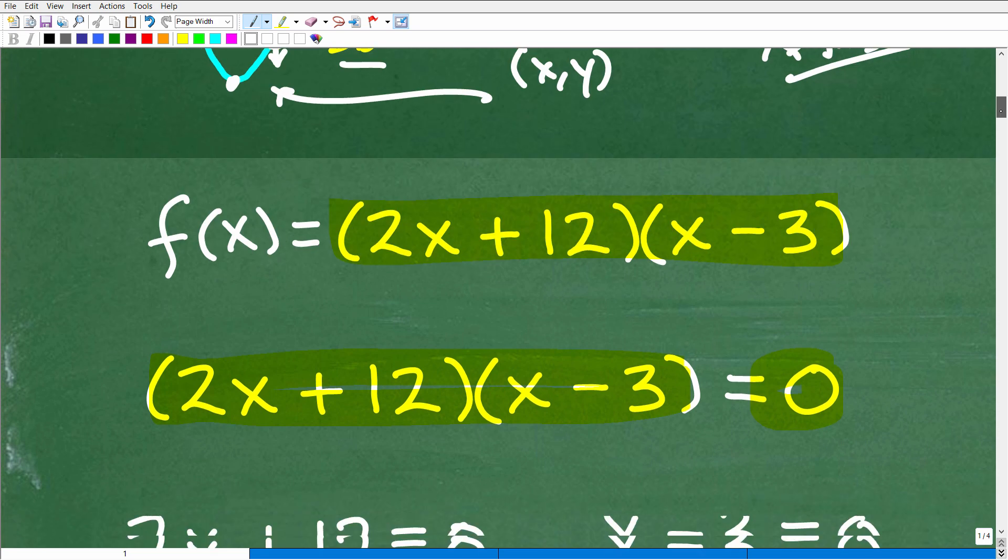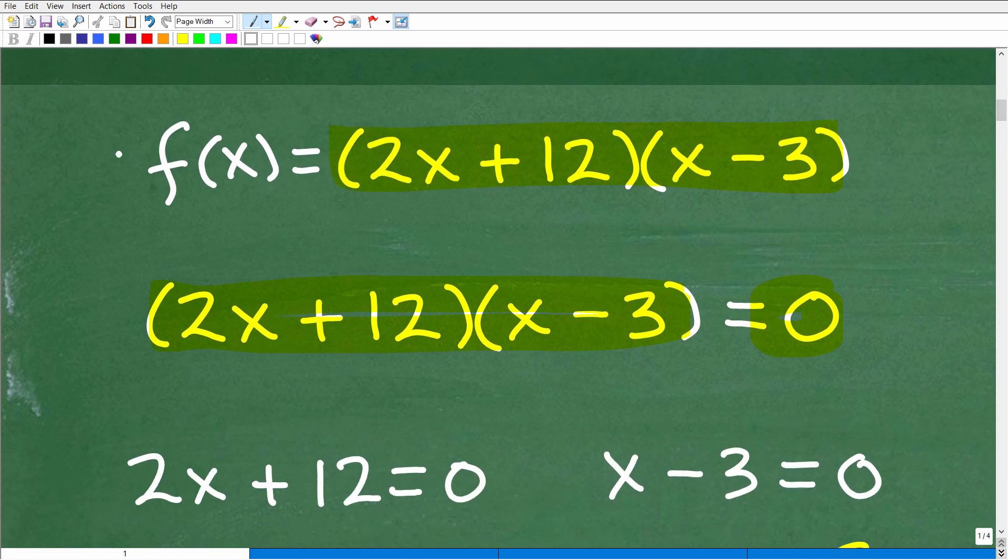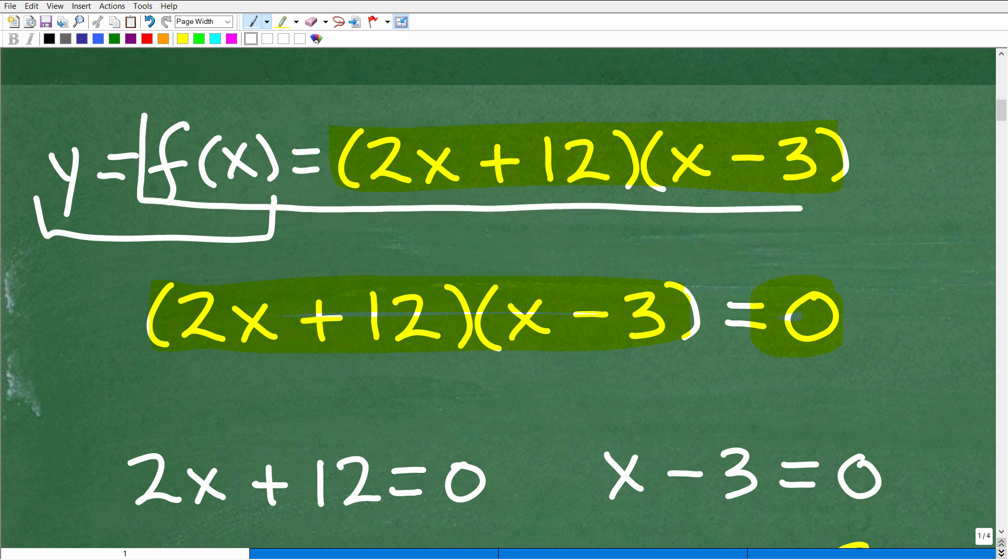So here, our function f of x is the same thing as y. Now, again, if you're kind of confused about what I'm talking about, this is algebra stuff that you should know. So y is equal to f of x. This is a function, this right here, technically, I would call this a quadratic function. If I took the f of x out, and I just had y, this would be a quadratic equation. But basically, it's more or less the same thing, just kind of different terminology.